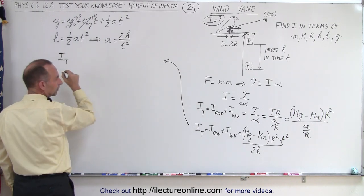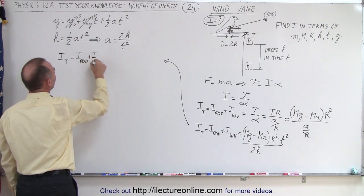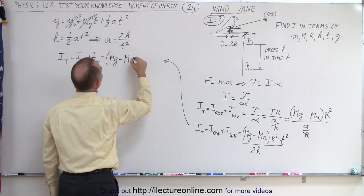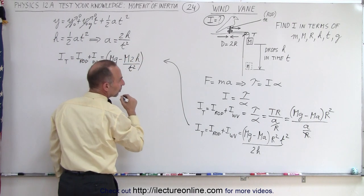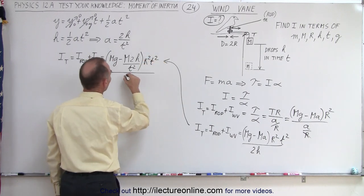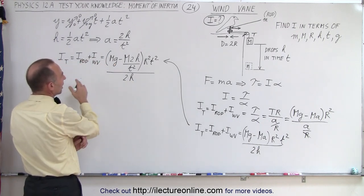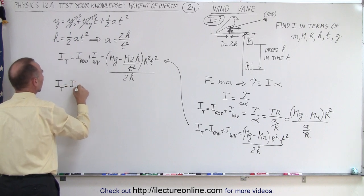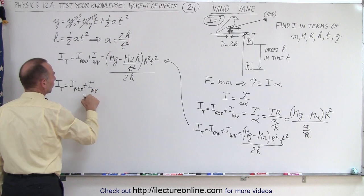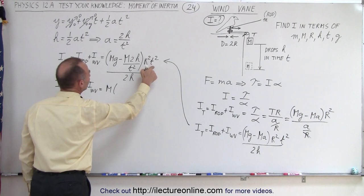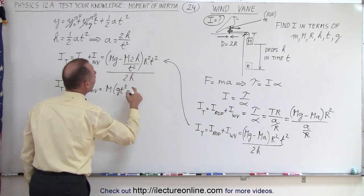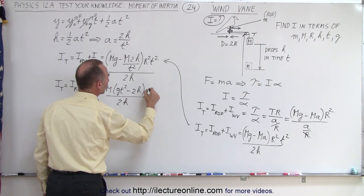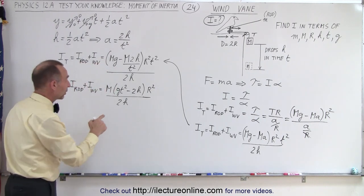So now I_total equals I_rod plus I_wind_vane, which equals the quantity Mg minus M times (2h over t squared), and that's multiplied by r squared t squared, all divided by 2h. We can factor out an M, then multiply the t squared through. When we multiply t squared times g we get g t squared, and 2h over t squared times t squared gives simply 2h, divided by 2h, with r squared remaining.